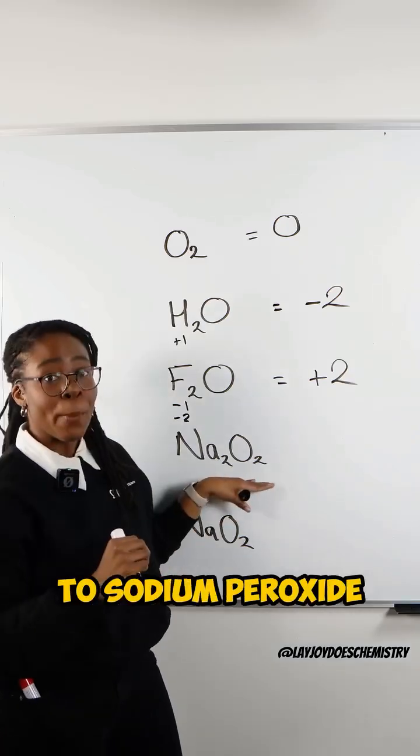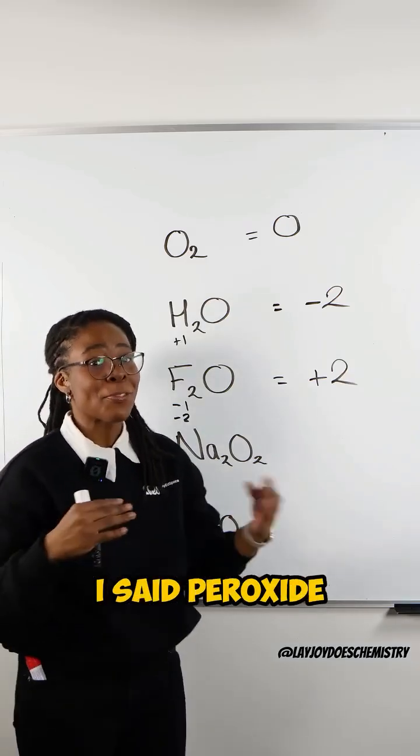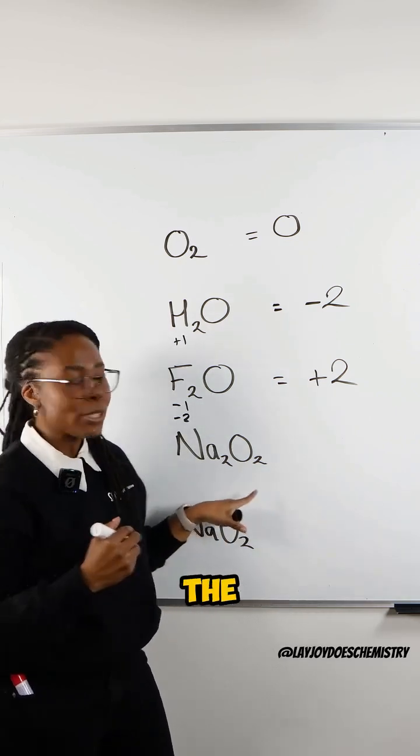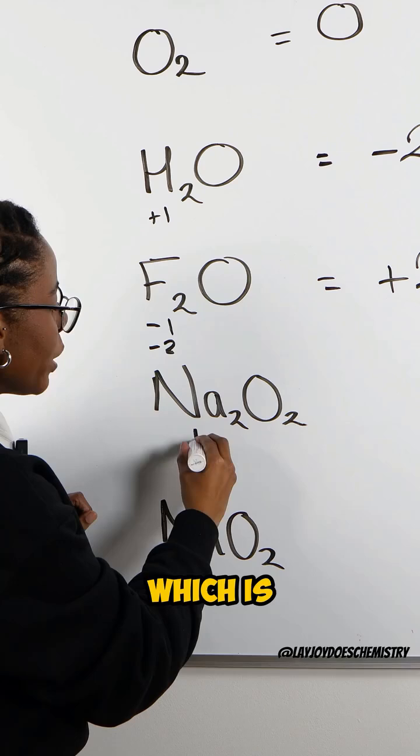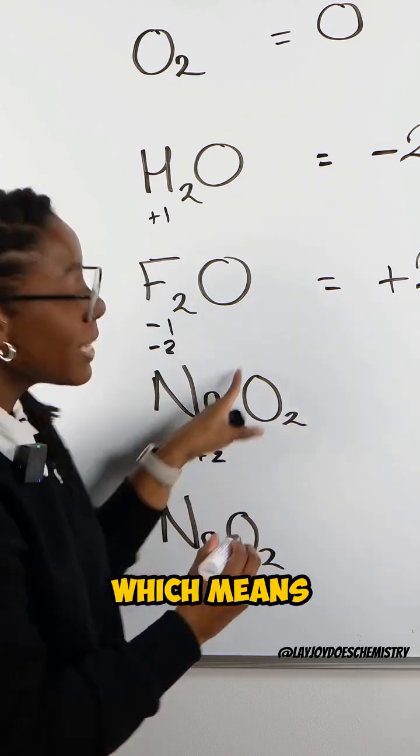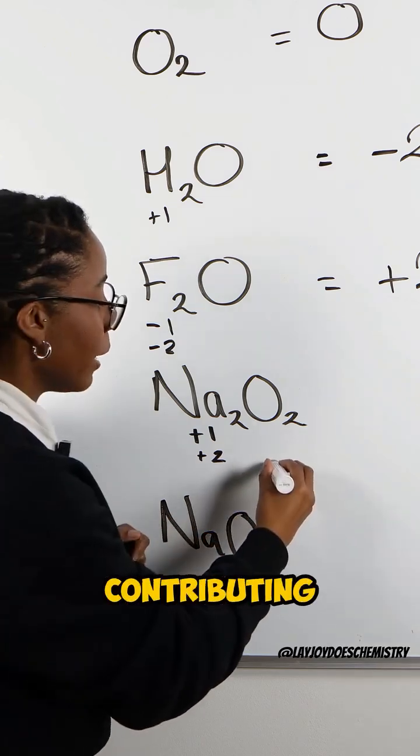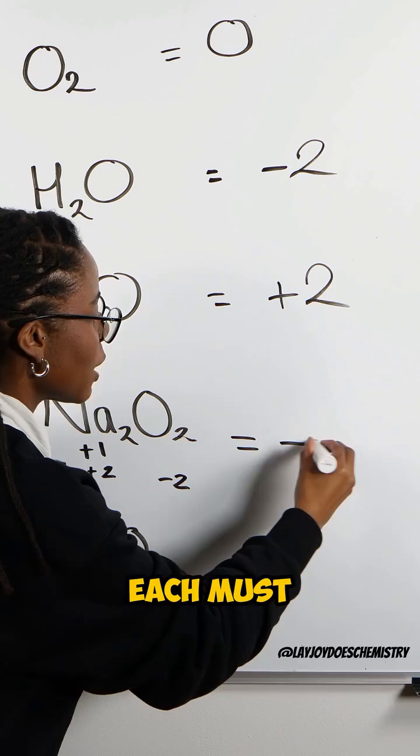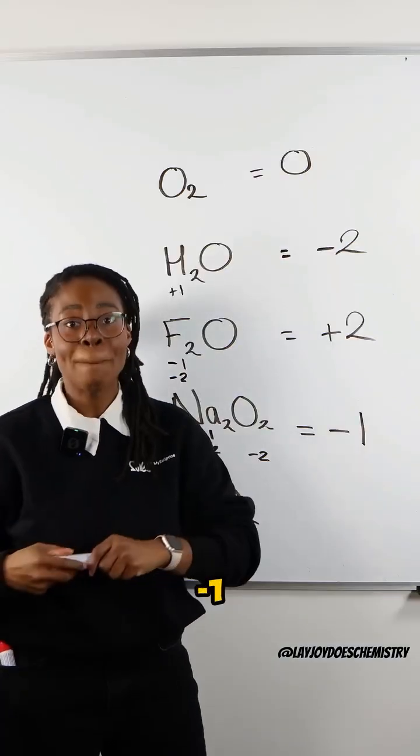Then we get to sodium peroxide, and as soon as I said peroxide, the answer should pop out to you. But again, we can use the oxidation state of the sodium, which is plus one. There are two of them, making that plus two, which means that the oxygens must be contributing minus two. There are two of them, so that means each must have an oxidation state of minus one.